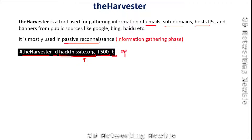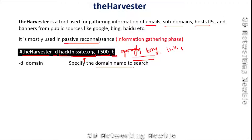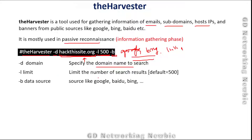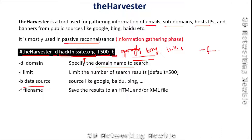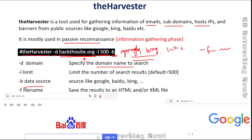Minus B specifies the source we want to use to search information about our target. The source can be Google, Bing, or many others which we'll see shortly. If you want to save the results as a file, at the end we can add minus F followed by a file name — the results will be saved as an HTML or XML file.